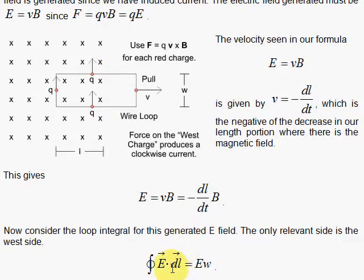Same here. And over on this side, there is no E. So we are finished. This integral around this loop is going to give us E times the width.